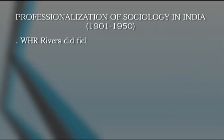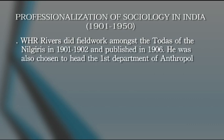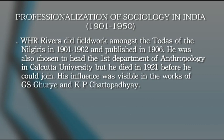The second phase, 1901 to 1950, saw the British moving away from early survey studies and beginning to train Indians to study society. W.H.R. Rivers carried out field work amongst the Todas of the Nilgiris — a tribe in India — from 1901 to 1902, published in 1906. Rivers was also chosen to start the first department of anthropology at Calcutta University, but he died in 1921 before he could join.